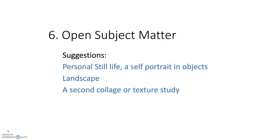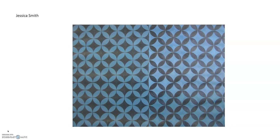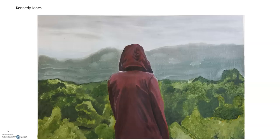The last painting of the semester is open — pretty much whatever you'd like to do. You could do a personal still life like a self-portrait with objects. If you're interested in landscape you're welcome to do that, or if you'd like to do a part two of your collage painting or texture study, you could do that as well. Here are some from previous semesters: this was a little personal still life of ceramic figures the artist had made in ceramics class. This person was interested in abstraction, so that's certainly a possibility. And this is a photo-based painting — sort of a texture study and landscape at the same time.